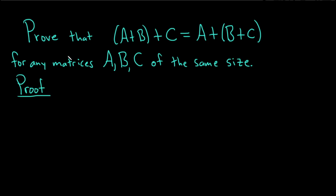We need some notation in order to indicate the ij entry of each matrix. So let a_ij, so A ij, denote the ij entry of A.